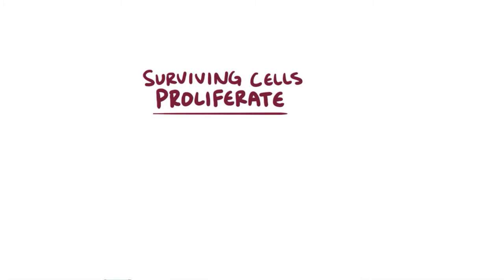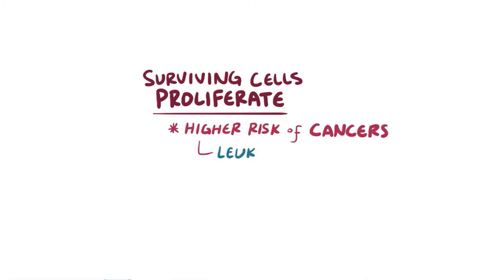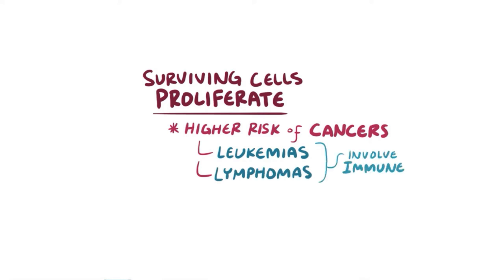Because of this, it's thought that people with ataxia telangiectasia can develop cancers, especially leukemias and lymphomas, both of which involve immune cells.